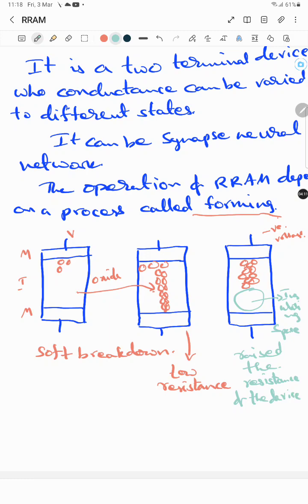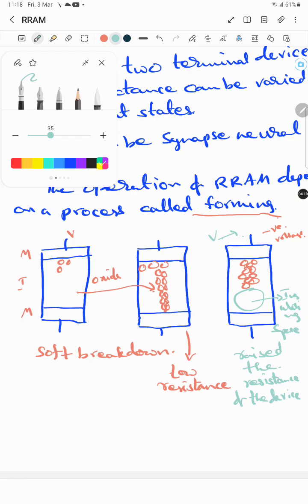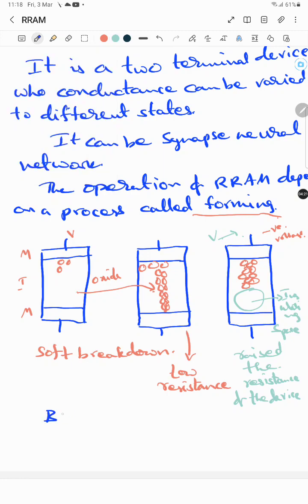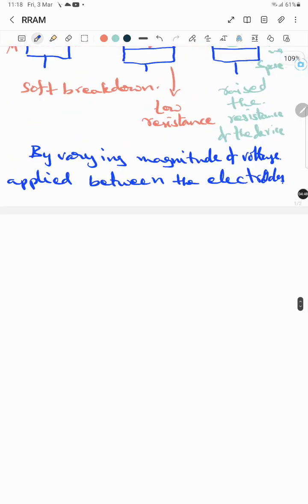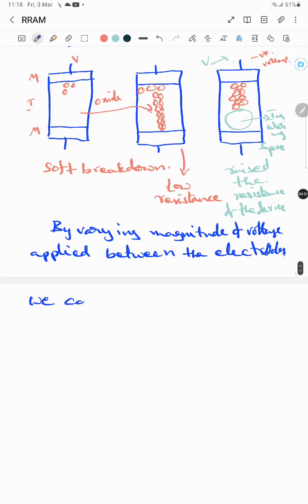By varying the magnitude of the voltage applied between the electrodes, we can tune the device conductance or resistance.